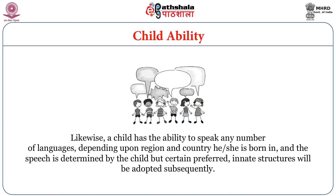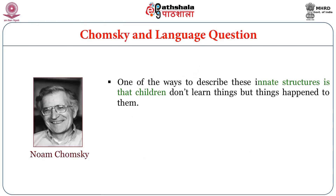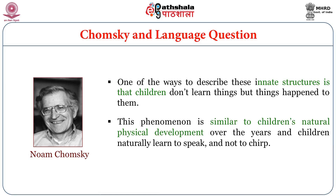A child has the ability to speak any number of languages depending upon the region and country in which he or she is born, and the speech is determined by the child, but certain preferred innate structures will be adopted subsequently. One of the ways to describe these innate structures is that children don't learn things — things happen to them. This phenomenon is similar to children's natural physical development; children naturally learn to speak and not to chirp — they are not birds.